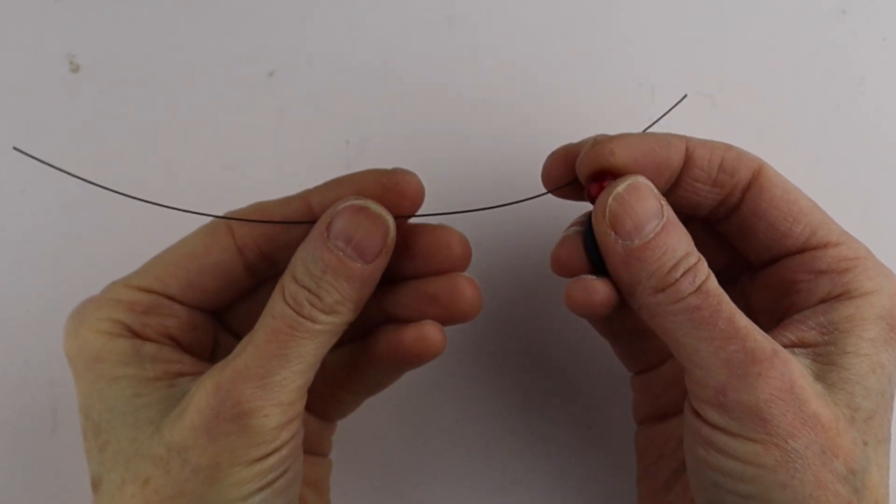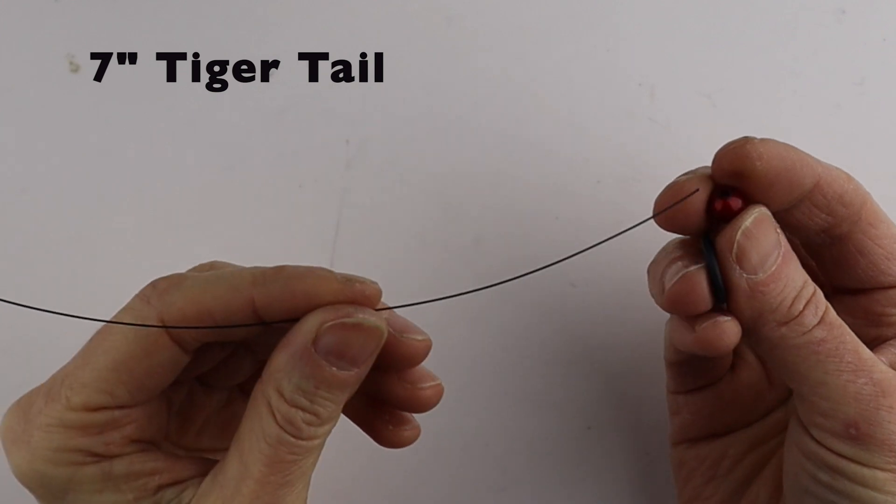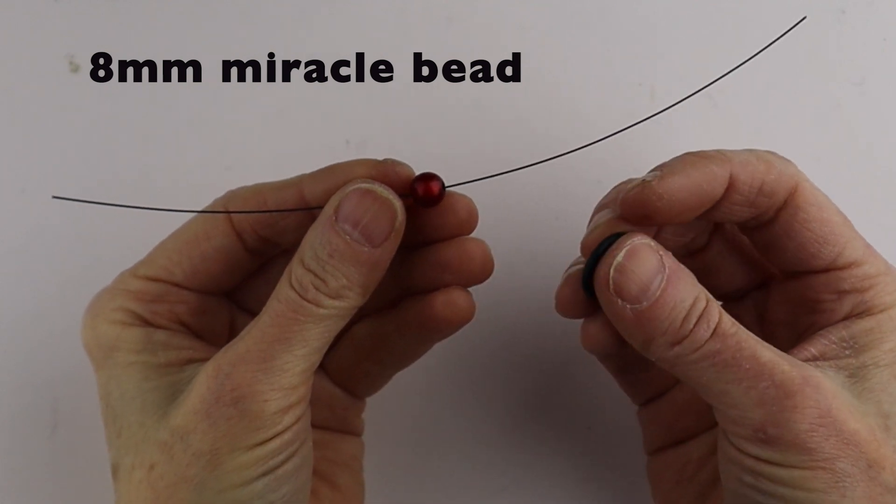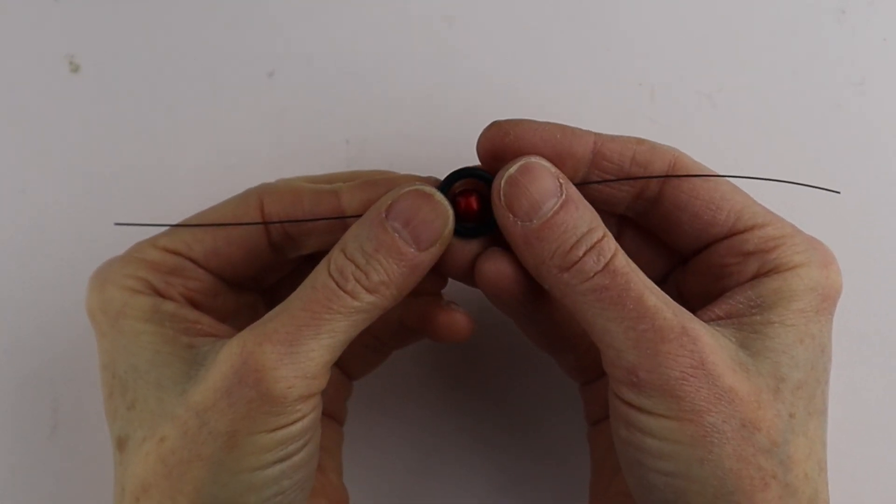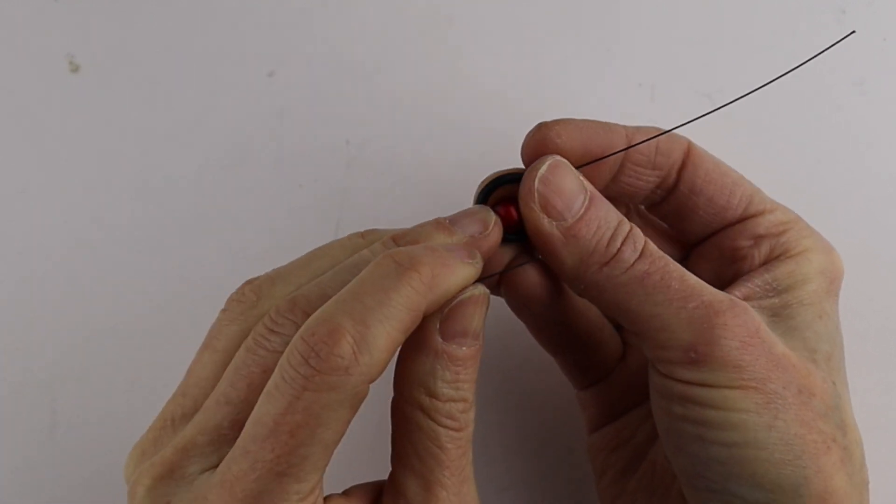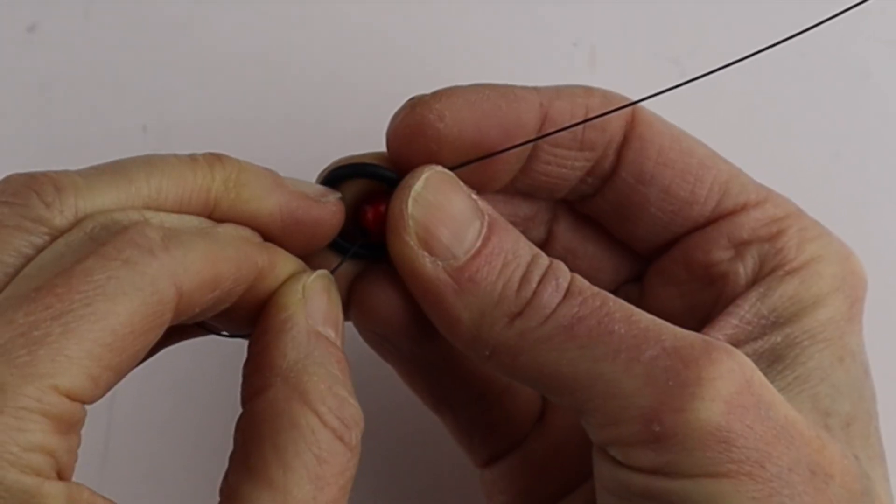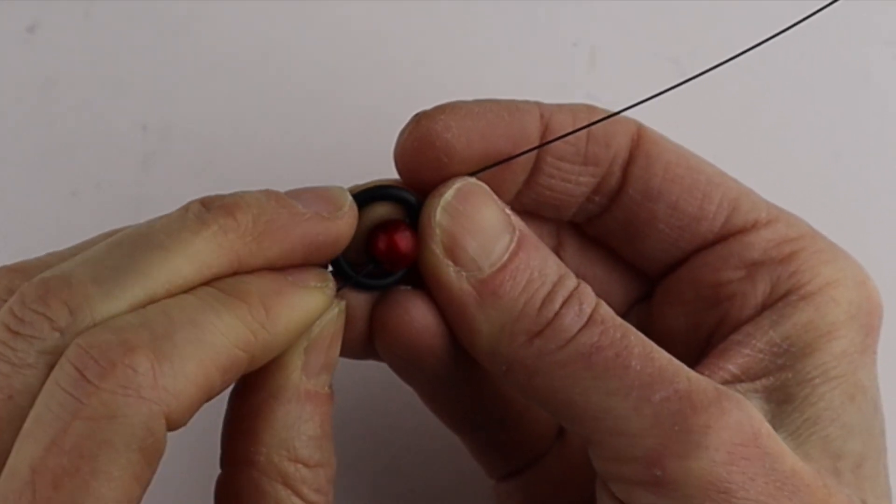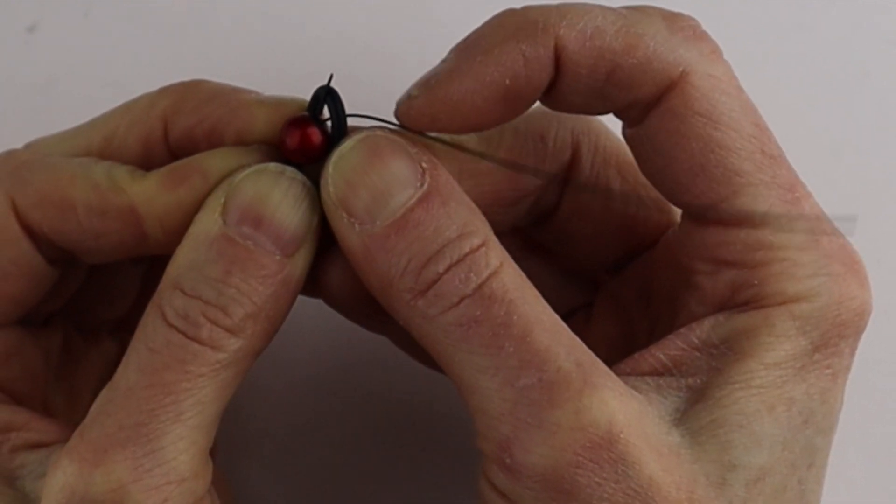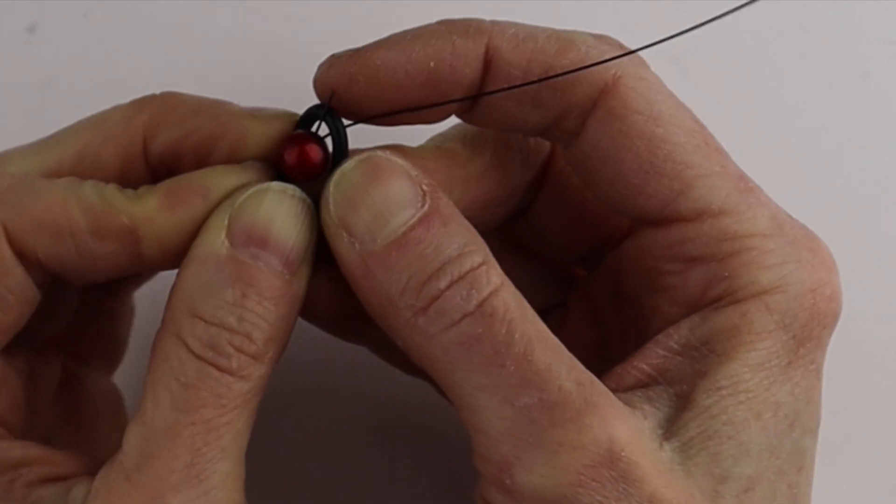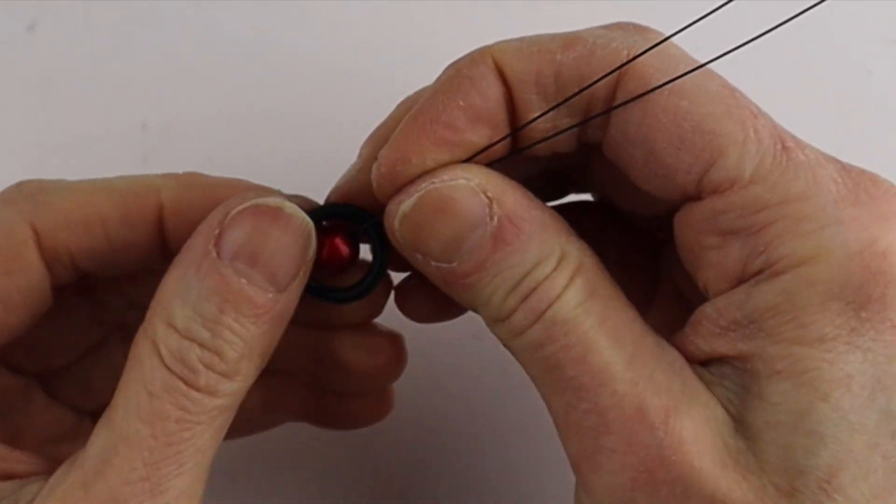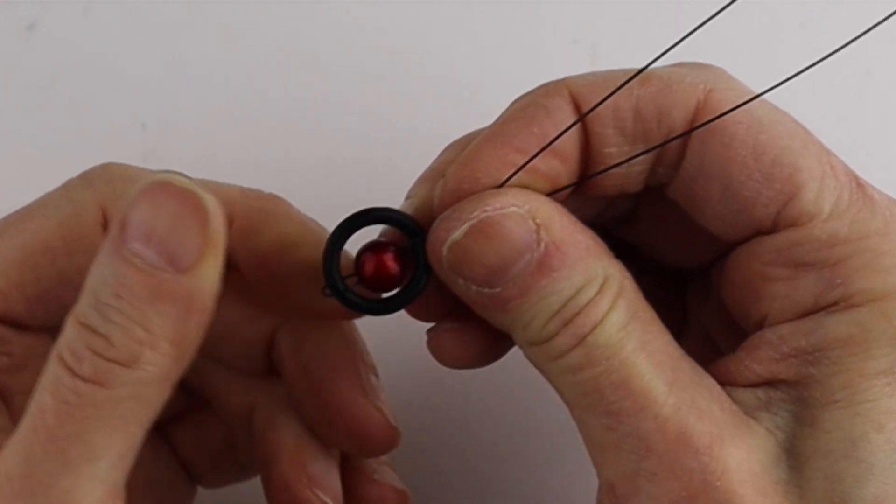For the earring, take about a 7 inch piece of Tiger Tail. Put on the 8 millimeter bead and stick the O-ring on top. Take this end and put it back through the hole like we did with the bracelet, coming out above the O-ring—one wire under, one above. Pull that one out so it's centered.